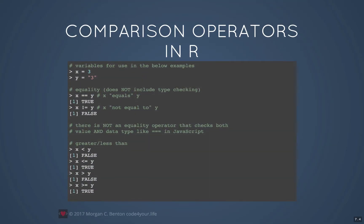In R, your equality operator does not include type checking. So if you have the integer 3 and the string three, they will be deemed the same if you say x equals equals y. There is no equality operator in R which is like the triple equals operator in JavaScript, so you need to be careful about which data types you're using when using comparison operators in R.